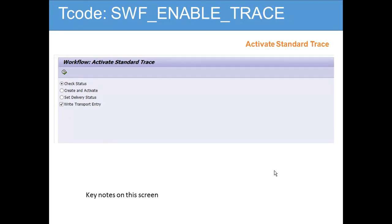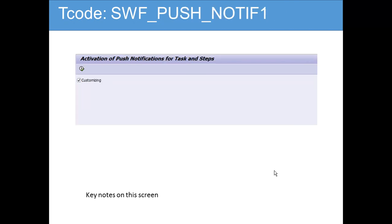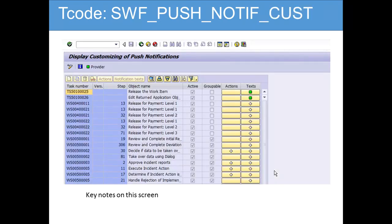Then you have Activate Standard Trace, where you can check and activate the trace so you can see what the workflow is doing — useful if there is any performance issue or if you want to debug the workflow. Then there is the Activation of Push Notification for tasks and steps, which you can customize here.